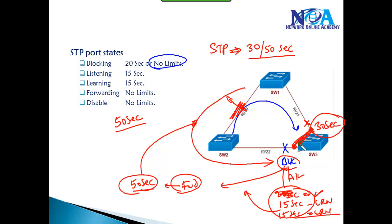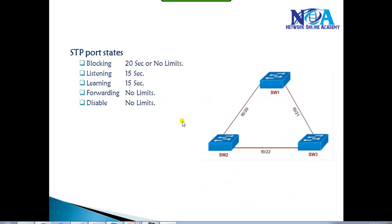If the link on the same switch goes down as the blocking port, it takes around 30 seconds. If any link that is not on the same switch fails — an indirect link — it takes around 50 seconds default convergence time. This behavior will be verified practically in the next section on the command line.